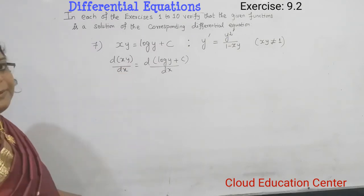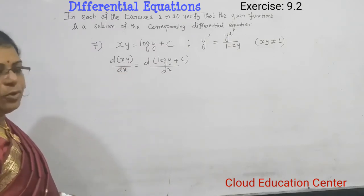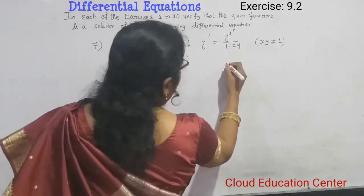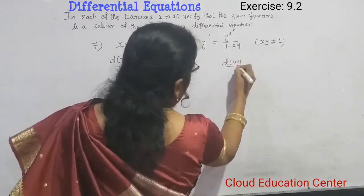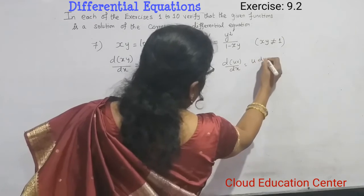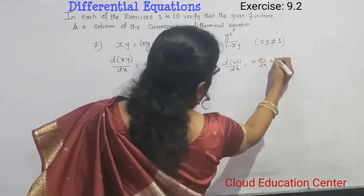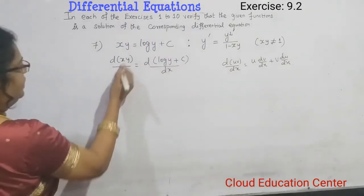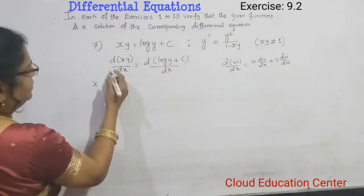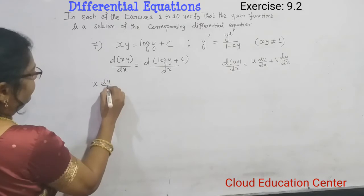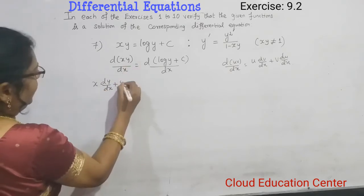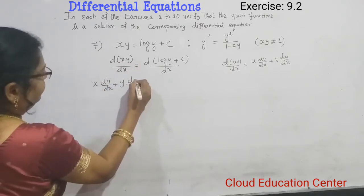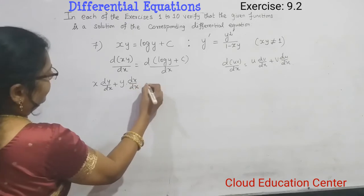Both are joined in the multiplication, so we should use the product rule. Product rule is differentiation of uv with respect to x, which is u dv by dx plus v du by dx. We'll substitute here. So x comes as it is, differentiation is dy by dx. Now y comes as it is, differentiation of dx by dx equals one.